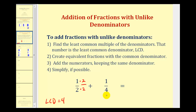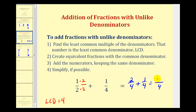Now notice how we have a common denominator of four. We would have two-fourths plus one-fourth, so the denominator stays four, and then we add the numerators. Two plus one is equal to three, so the sum is equal to three-fourths.